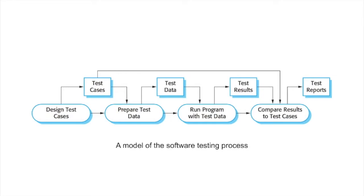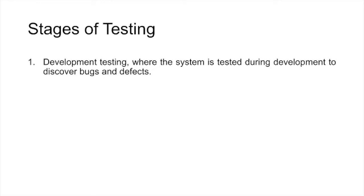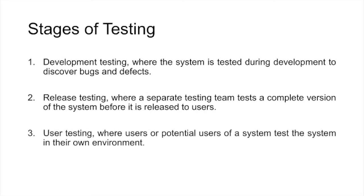The next thing is stages of testing. There are mainly three basic stages: one, development testing, where the system is tested during development to discover bugs and defects; two, release testing, where a separate testing team tests a complete version of the system before it is released to users; and finally, user testing, where users or potential users of a system test the system in their own environment. This presentation will basically deal about development testing, wherein we talk about white box testing, unit testing, black box testing, and advantages and disadvantages for all these types of testing.